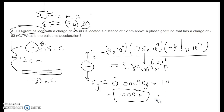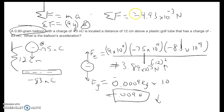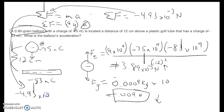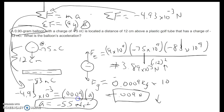Taking upward as positive and downward as negative, we add the two forces. The net force comes out to negative 4.93×10⁻³ newtons, meaning the net force on the balloon is downward. Substituting back into Newton's second law: −4.93×10⁻³ = 0.0009 × a, which gives an acceleration of −5.5 meters per second squared.